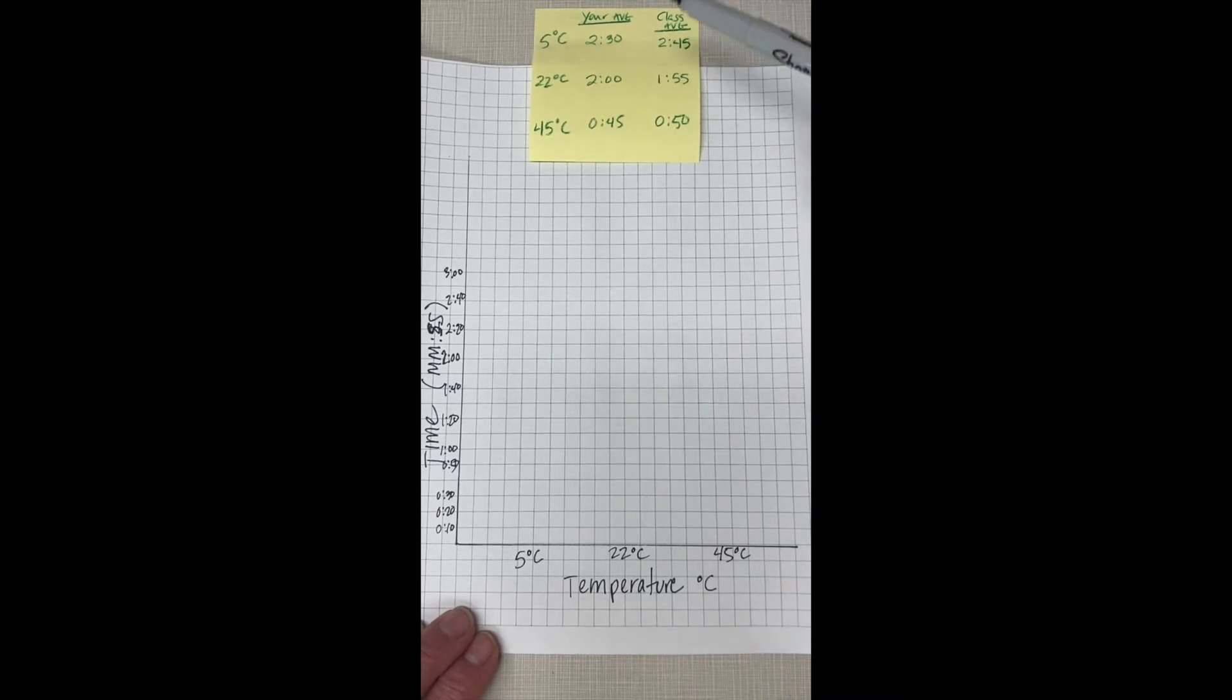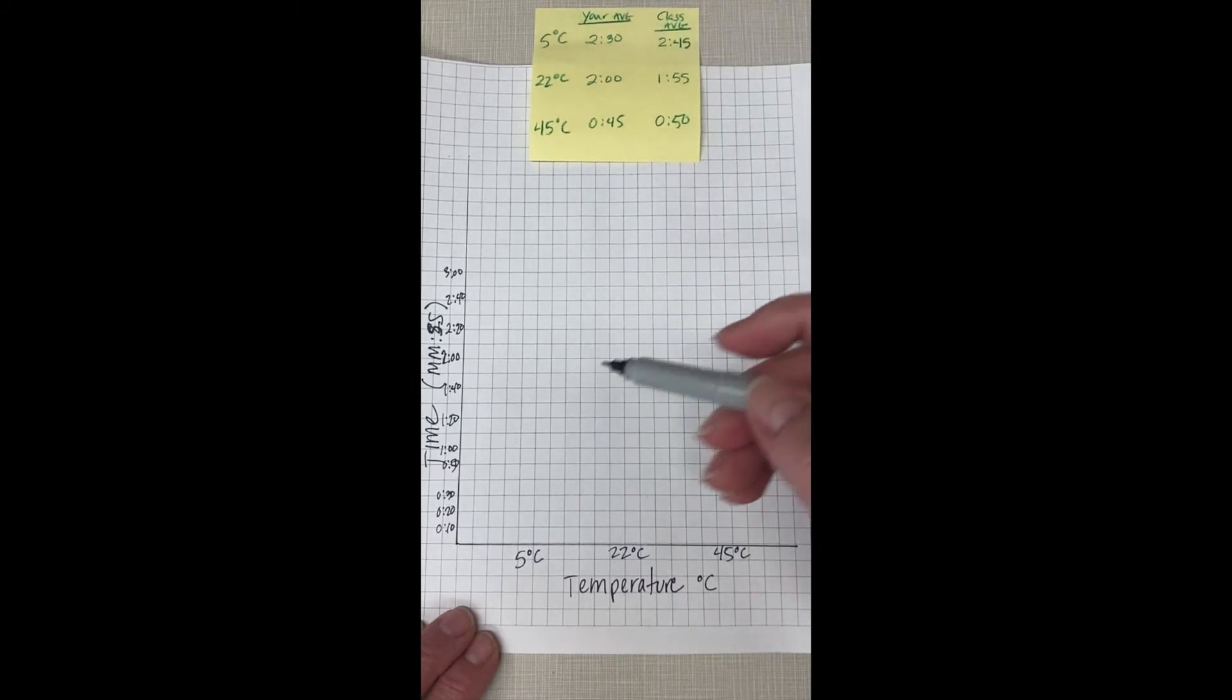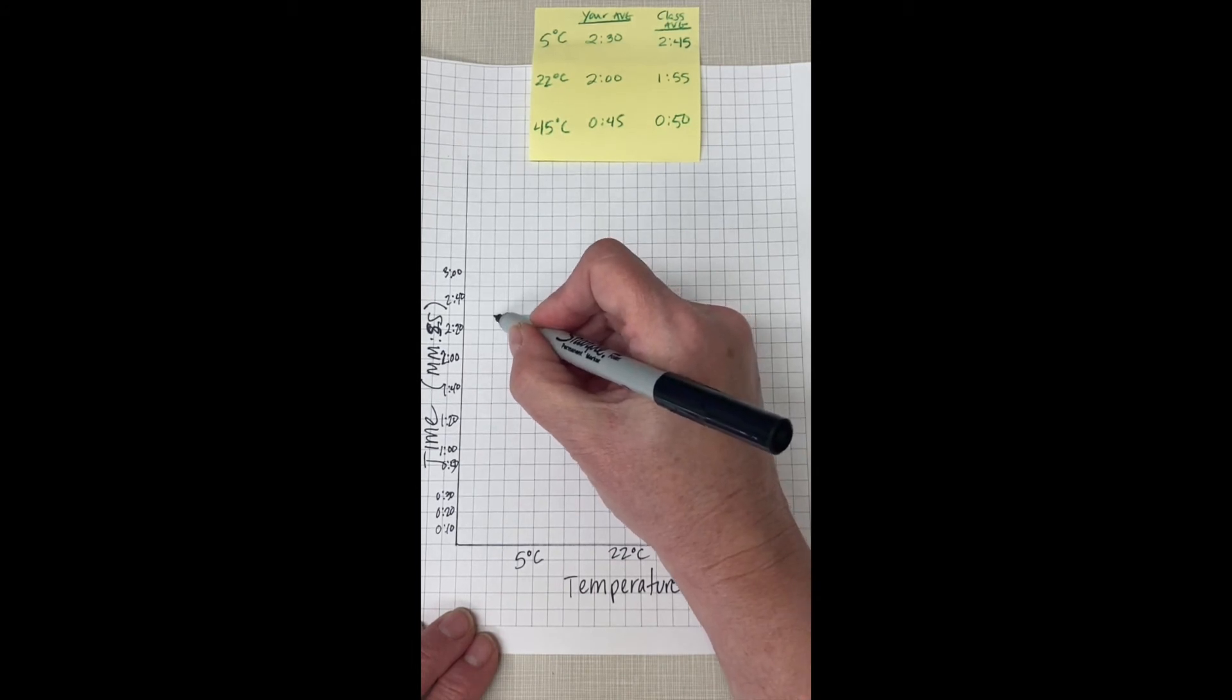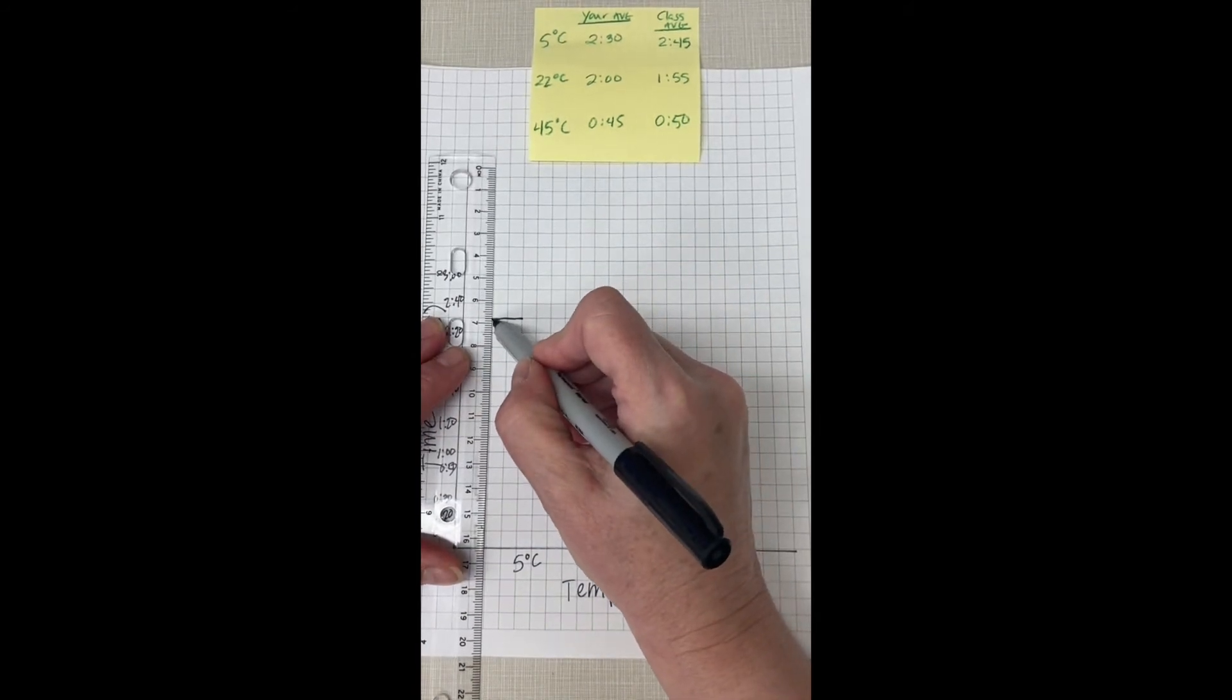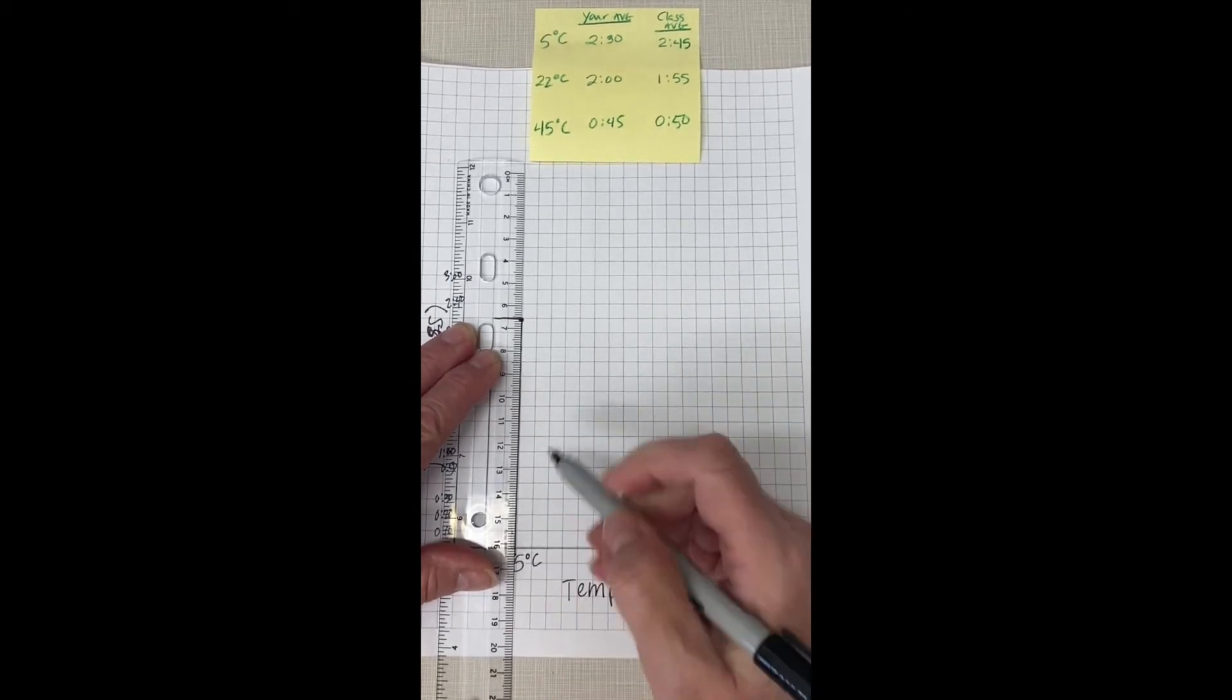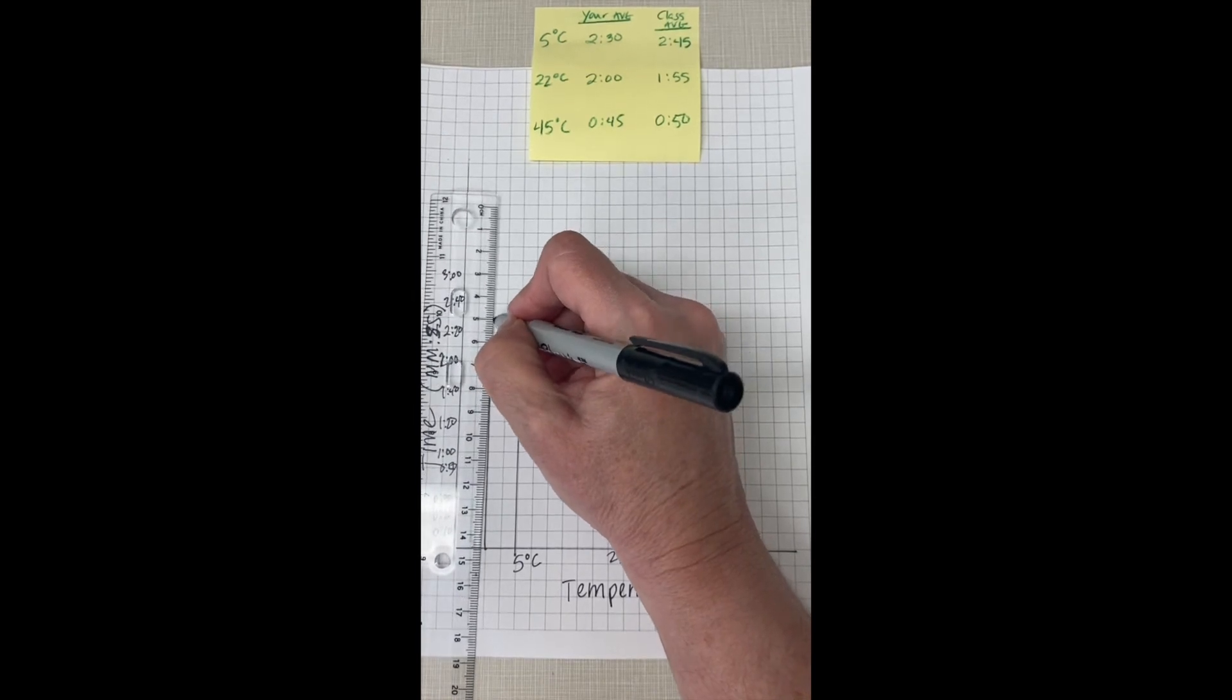So we're going to graph our data first here at five degrees C. It was two minutes and 30 seconds. So if you go up to here, you can see that two minutes and 30 seconds is right here. So we can make a bar. And again, I'm going to use a ruler to help me make a very nice, pretty graph. Like that. That's my data. Like so.